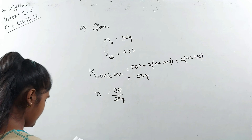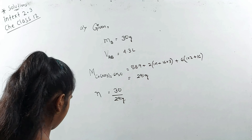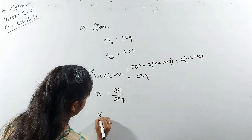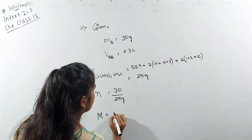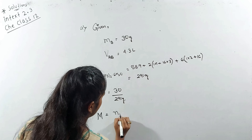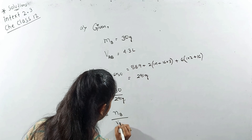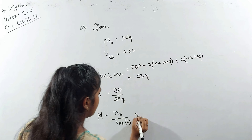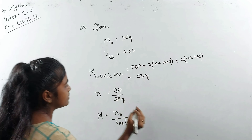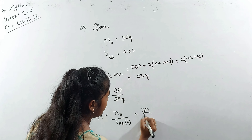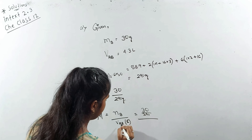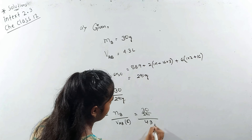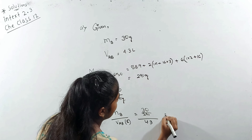The molar mass of Co(NO₃)₂·6H₂O: cobalt is 58.9, plus nitrogen 14, and oxygen 16 — with 3 oxygens per nitrate group — plus 6 water molecules, each with hydrogen mass 1 into 2 and oxygen 16. If we calculate it, it will be 291 grams per mol. This is the molar mass.